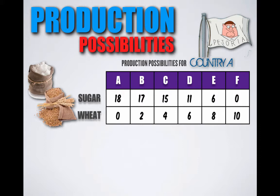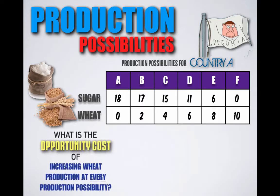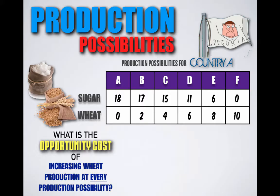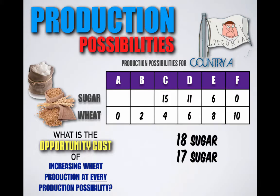Using the function provided, we can now determine the opportunity cost of shifting production from one combination to another. What is the opportunity cost of increasing wheat production at every production possibility for the country of Petoria? Remember that opportunity cost is what is given up when making a decision. If Petoria chooses to shift production from combination A to combination B, they would decrease sugar production from 18 units to 17 units. So the opportunity cost of shifting from A to B will be one unit of sugar.